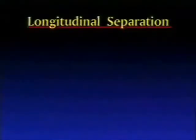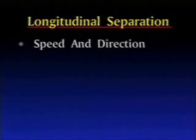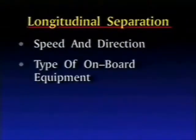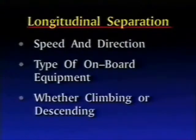The factors an air traffic controller must consider when maintaining lateral separation include the distance between aircraft when flying converging or diverging radials, the minima along airways or routes, and the amount of space needed for turns. Longitudinal separation describes the spacing of aircraft flying at the same altitude when on the same, converging, or crossing courses. When maintaining longitudinal separation, the controller must consider the speed and direction of the aircraft, the type of equipment on board, and whether the aircraft are climbing or descending.